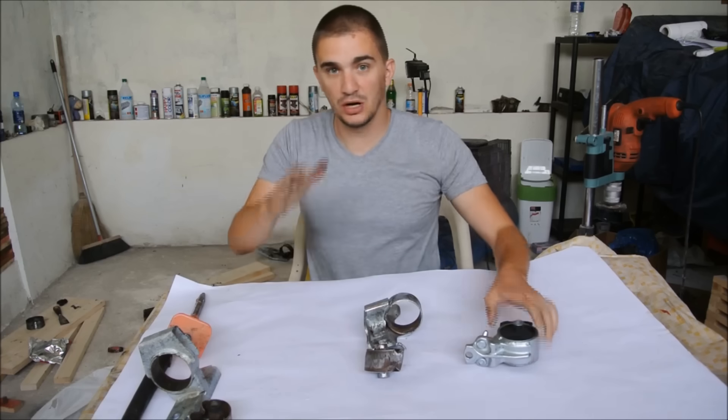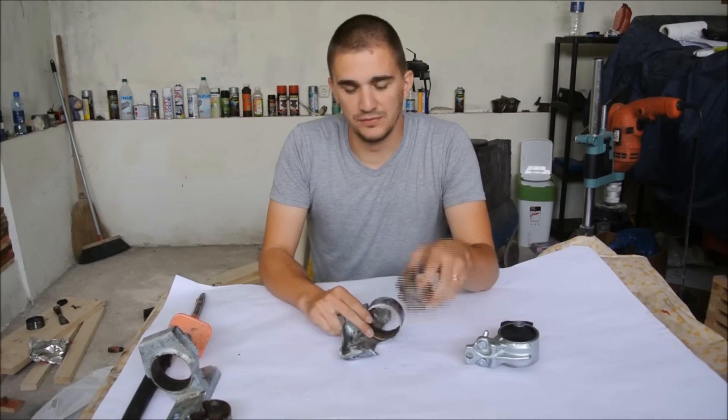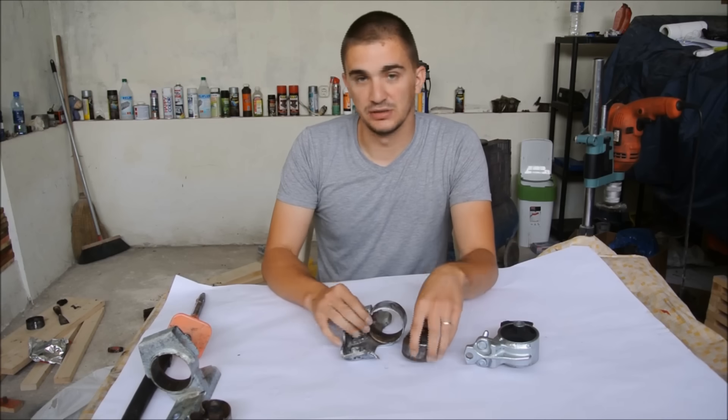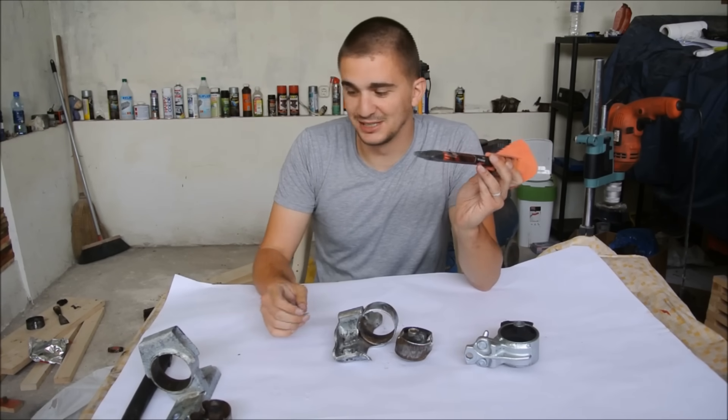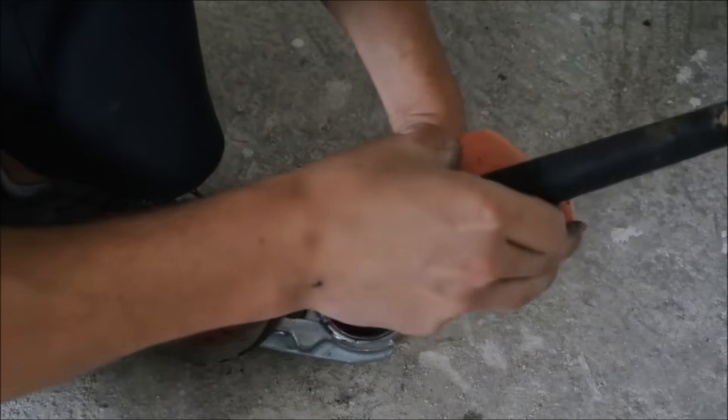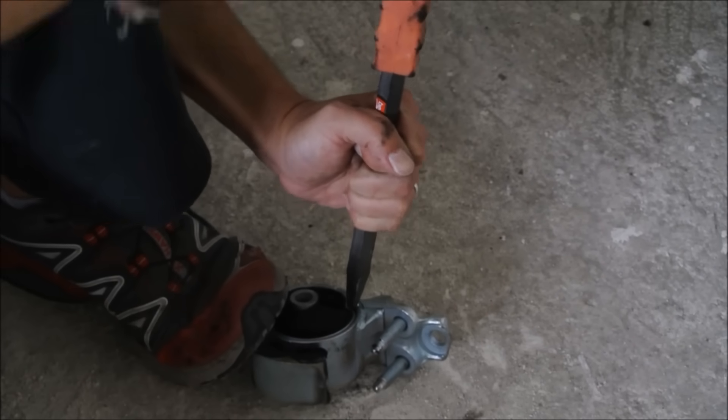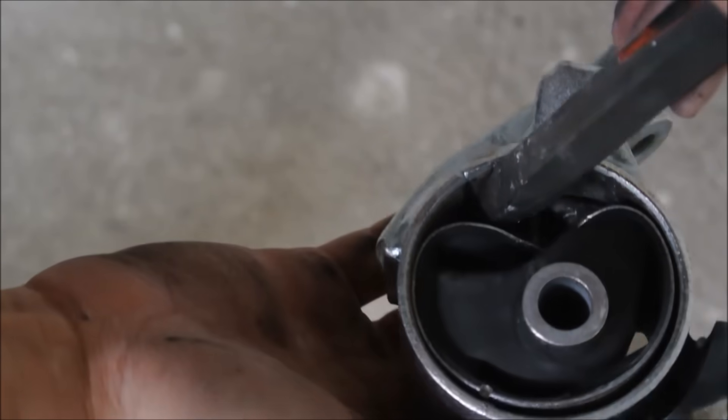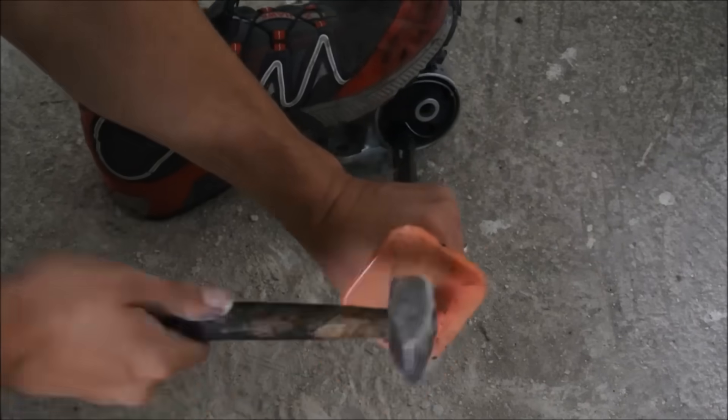Now, if you have a shop press, that would be great, you can actually press it out, but if you don't, don't worry, you can actually get it out with a bit of brute force and what you need is a chisel and a hammer. So how you do it is you put the chisel right in between the bracket and the mount insert and you basically try to knock out the mount in this way.